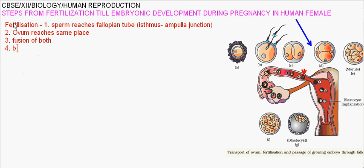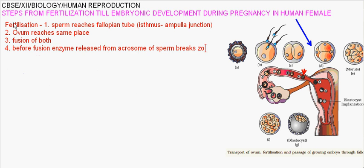Before fusion, enzymes are released from the acrosome part of the sperm. The sperm breaks the zona pellucida, which is present outside the Graafian follicle of the ovum. Only one sperm can break this membrane. Then fusion of both gametes takes place, leading to formation of a zygote.